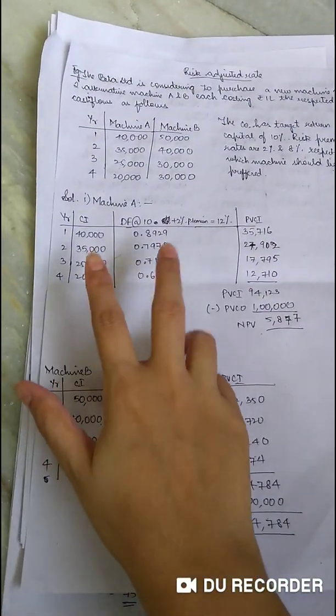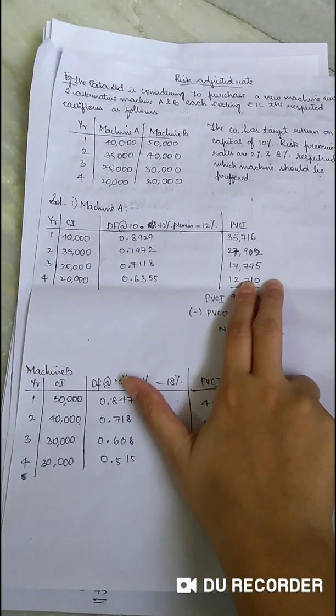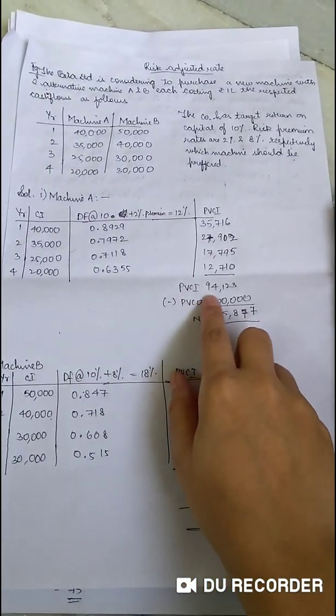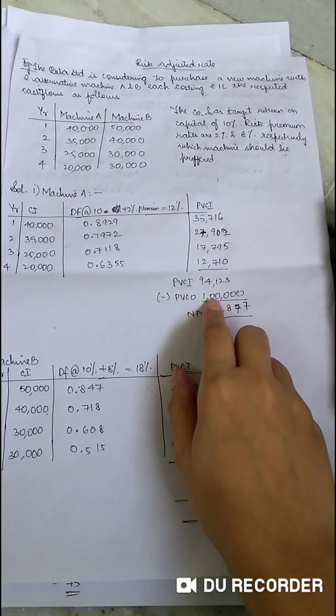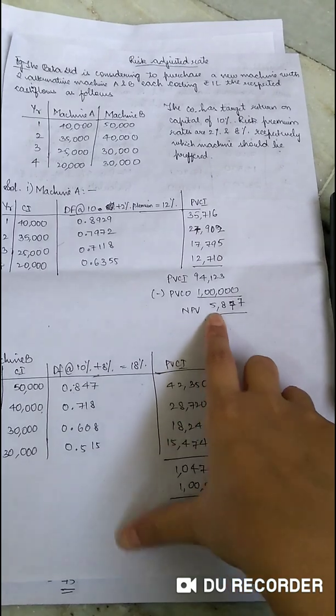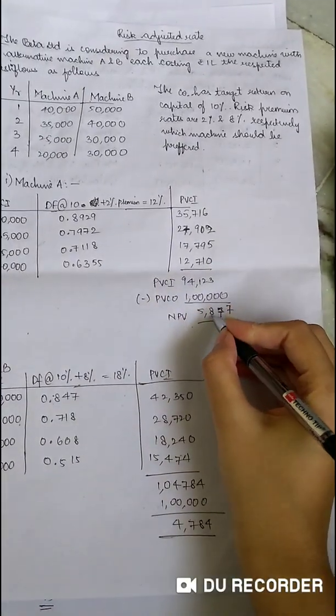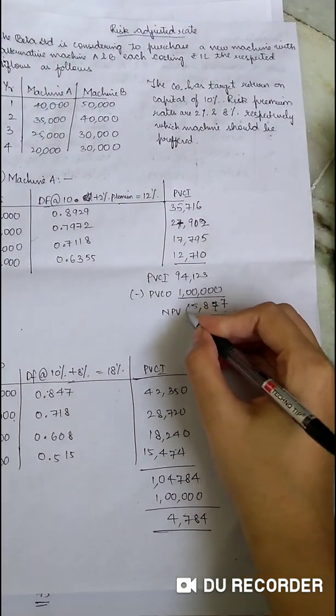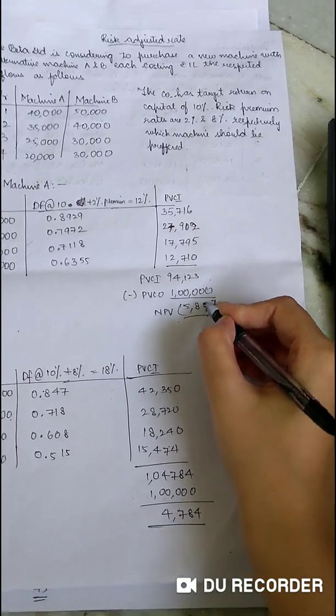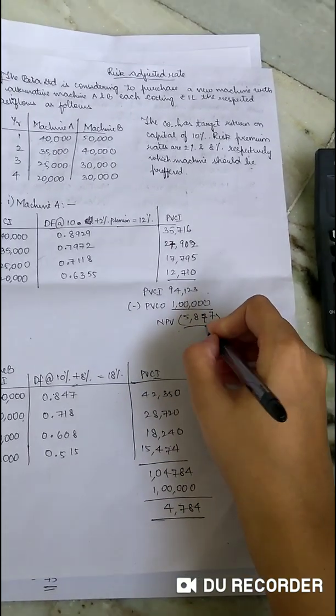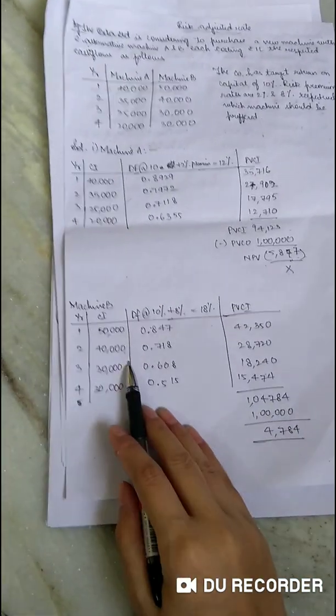You got it for all the 4 years. Now how to calculate your present value of cash inflows? That is nothing but multiplying your cash inflows into the discounting factor. You will get your present value of cash inflows. Now what is your answer? 94,123. What is the investment amount? 1 lakh rupee. So what is your return? The amount is 5,877, but is it positive? No, it is negative. That means here it is a negative value, so returns are negative, so preferably we will not be selecting this machine.